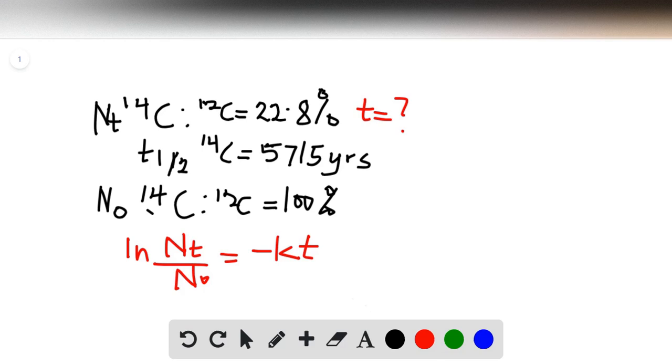We have everything except k and t, and we can find k using the half-life we've been provided. So k is going to be 0.693 divided by 5715 years, and that gives us 0.000121 per year.